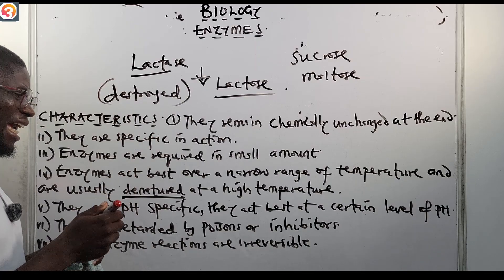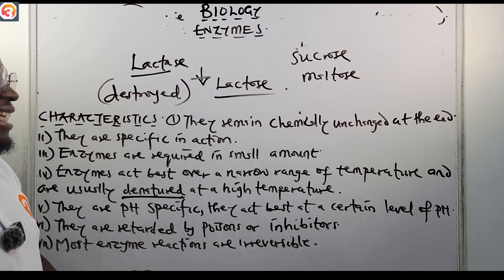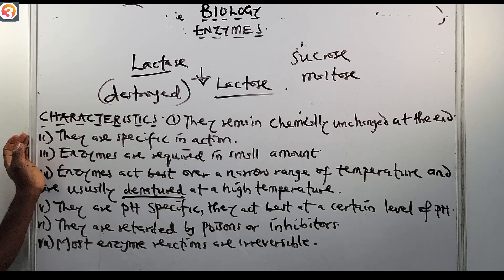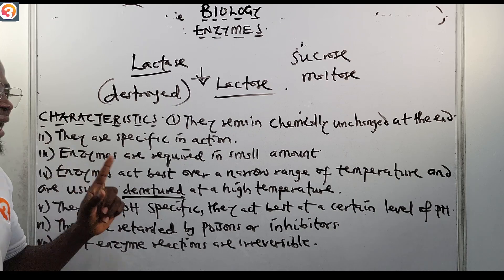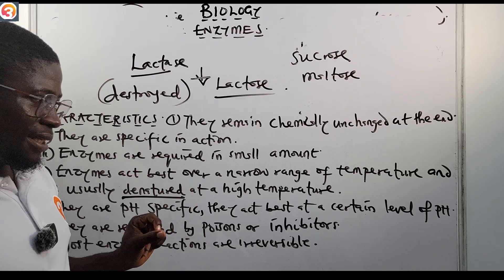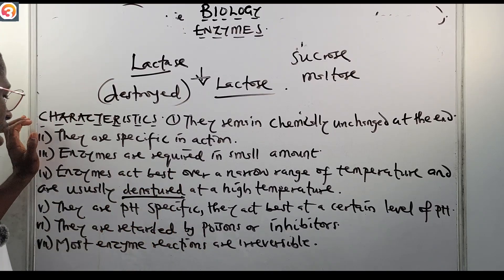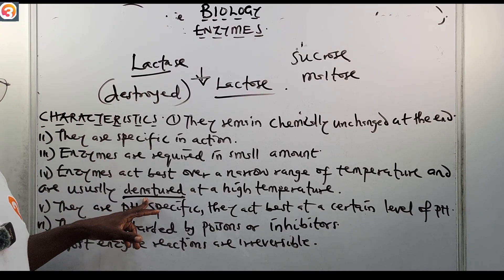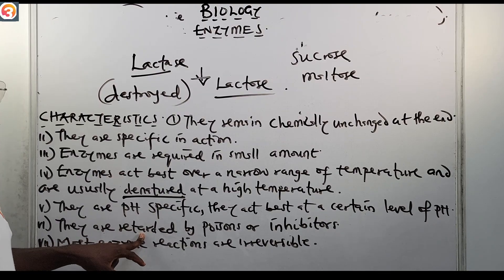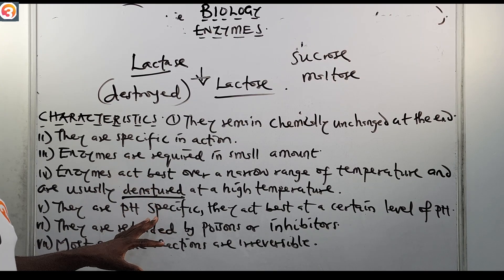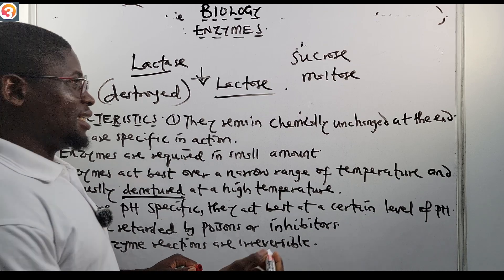Enzymes are denatured, that is destroyed, at very high temperatures. They are also pH specific — they act best at a certain level of pH. They are retarded by poisons or inhibitors, just as high temperature denatures them. Most enzyme reactions are also irreversible. And enzymes are soluble.